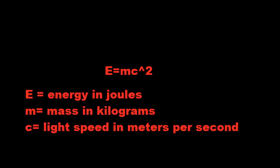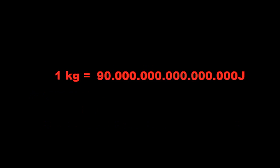E is the energy in joules, M is the mass in kilograms, and C is light speed, which is roughly 3 times 10 to the power of 8. One kilogram would be equivalent of 9 times 10 to the power of 16 joules of energy.